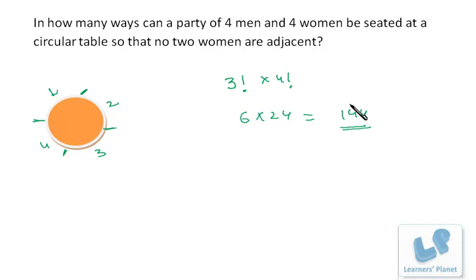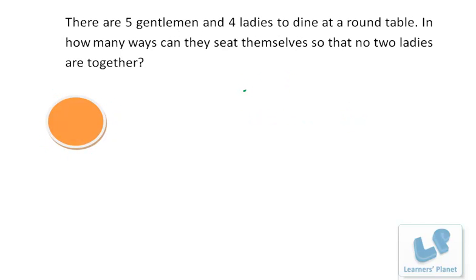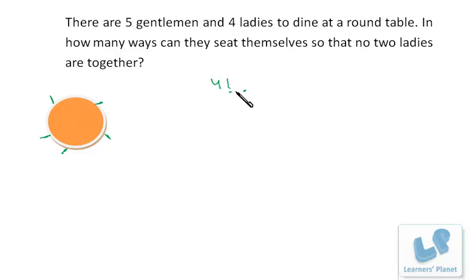That's a simple application of circular arrangement. Now there's a variation: in the previous case men and women were equal in number, but here there are five gentlemen and four ladies, with the same condition that no two ladies are together. First, arrange the five gentlemen around the circle in 4! ways. Now we arrange the four ladies in the available gaps.